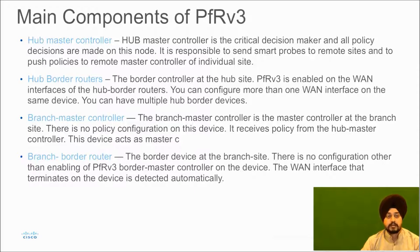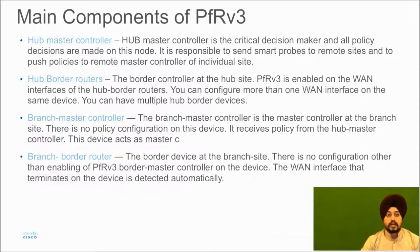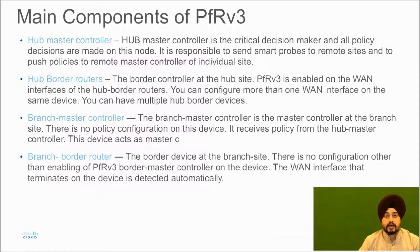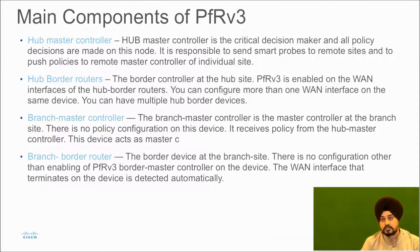The hub master controller pushes policies to other spoke sites in the PFR setup. Hub border routers are located at the hub site and are PFR-enabled. You can configure more than one WAN interface on these routers, and generally there are two or more border routers. Similarly, there is a master controller and a border router at the branch site, and the hub master is responsible for pushing policies to the spoke master.